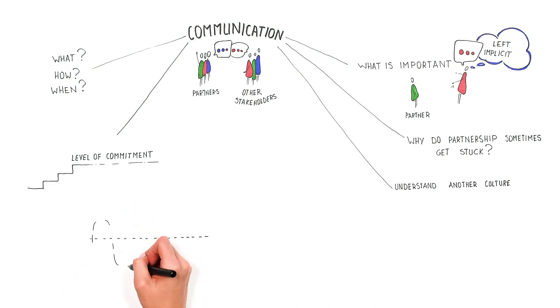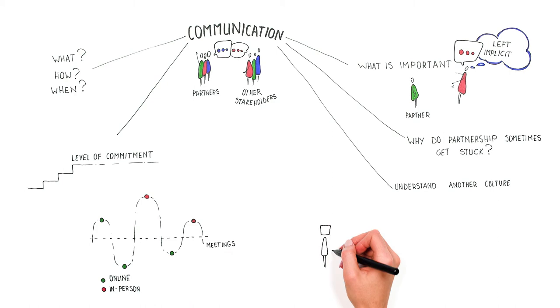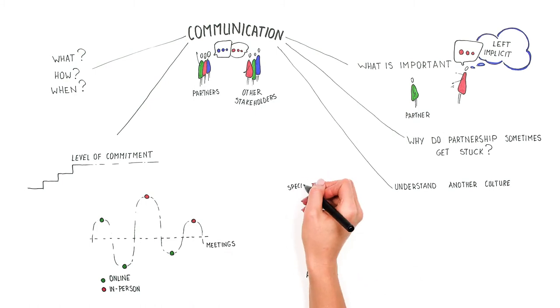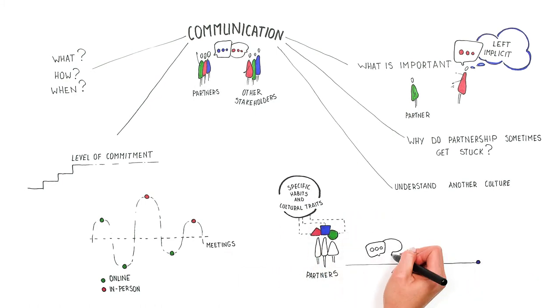It is essential for partners to agree on synchronous and asynchronous communication tools and the frequency of online and in-person meetings. Partners may also have their specific habits or cultural traits in the way they communicate or the way they make decisions in their organizations.